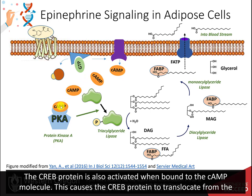Cyclic AMP, in turn, binds with protein kinase A to activate many downstream target pathways. One target is triacylglyceride lipase. PKA mediates the phosphorylation of this enzyme, increasing its activity. This enzyme hydrolyzes one of the fatty acids from the triacylglyceride, yielding one free fatty acid and one diacylglyceride.